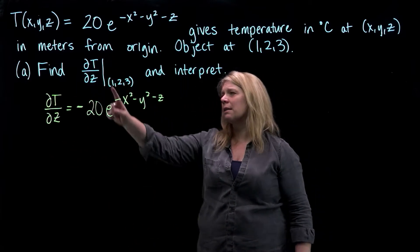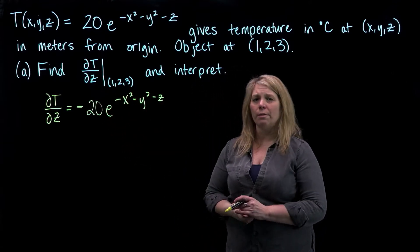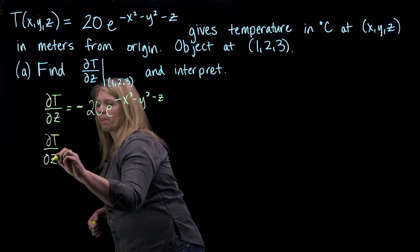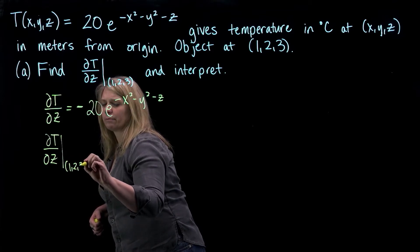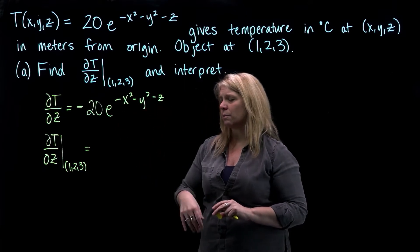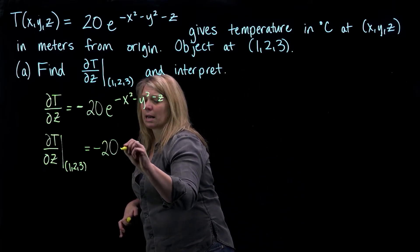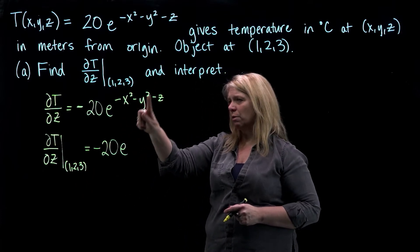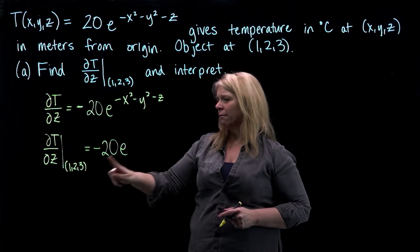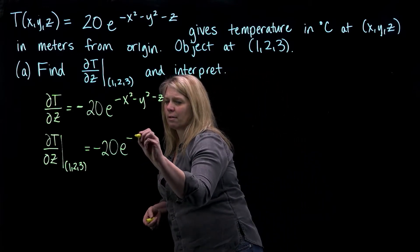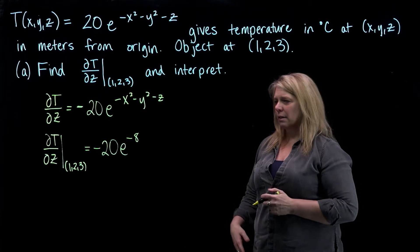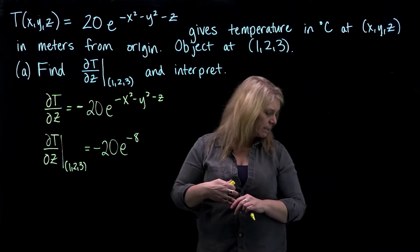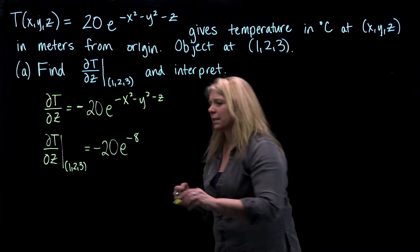Now ∂T/∂z evaluated at the point (1, 2, 3) — let's think about what that answer means. I'm going to plug these numbers in for x, y, and z and simplify. I'll have negative 20 e to the power: 1 squared is 1, 2 squared is 4, so negative 1 minus 4 is negative 5, and then minus 3, giving e to the negative 8. So I get a negative number. I could write that as negative 20 over e to the 8th, and the decimal approximation is approximately negative 0.0067.